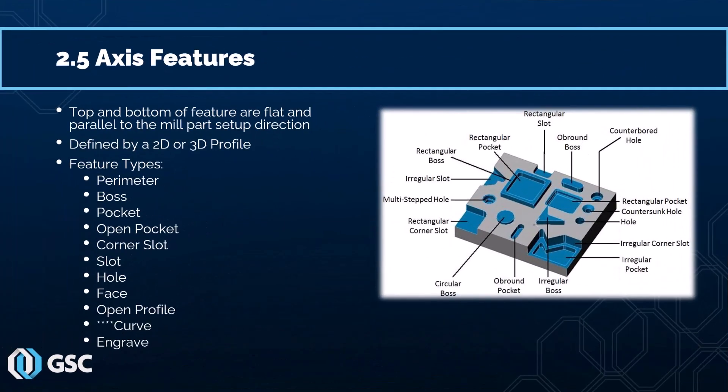Two-and-a-half axis features are essentially simple prismatic features that one would machine 80% of the time. What makes them a two-and-a-half axis feature is that the top and bottom of the feature are flat and parallel to the mill part direction. Examples in SOLIDWORKS CAM include pockets, slots, holes, bosses, and so on. Typically these features are going to be defined using some sort of 2D profile, and in the case of the curve feature, a 3D profile.